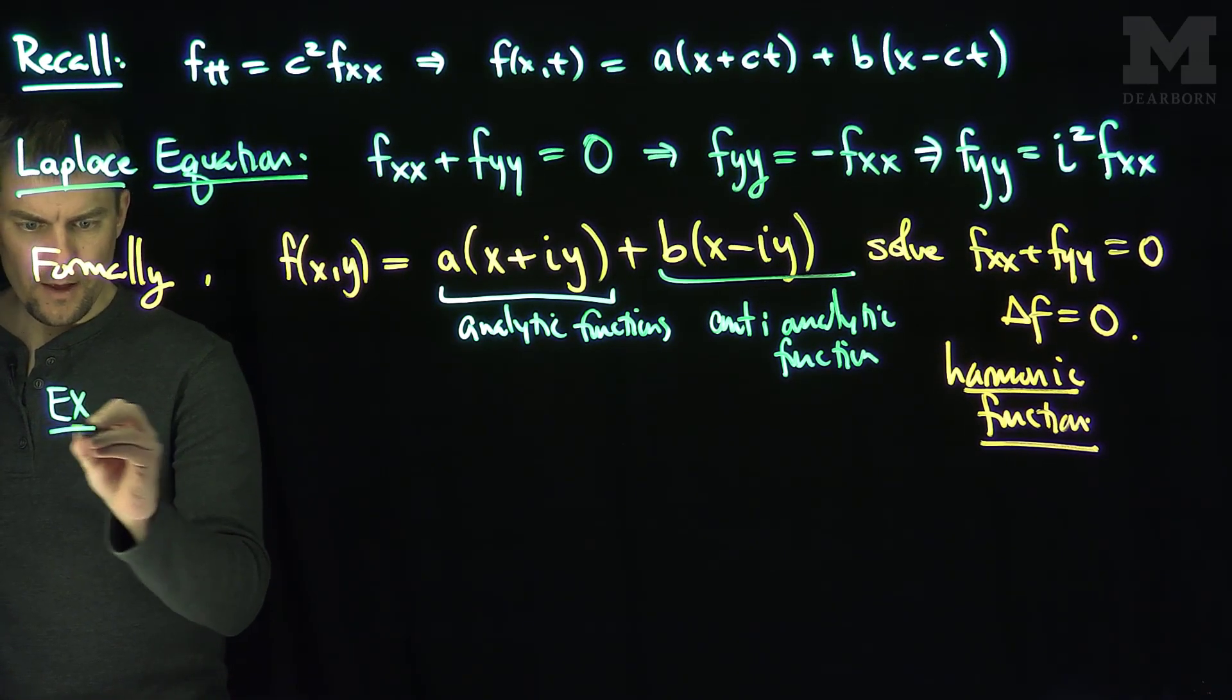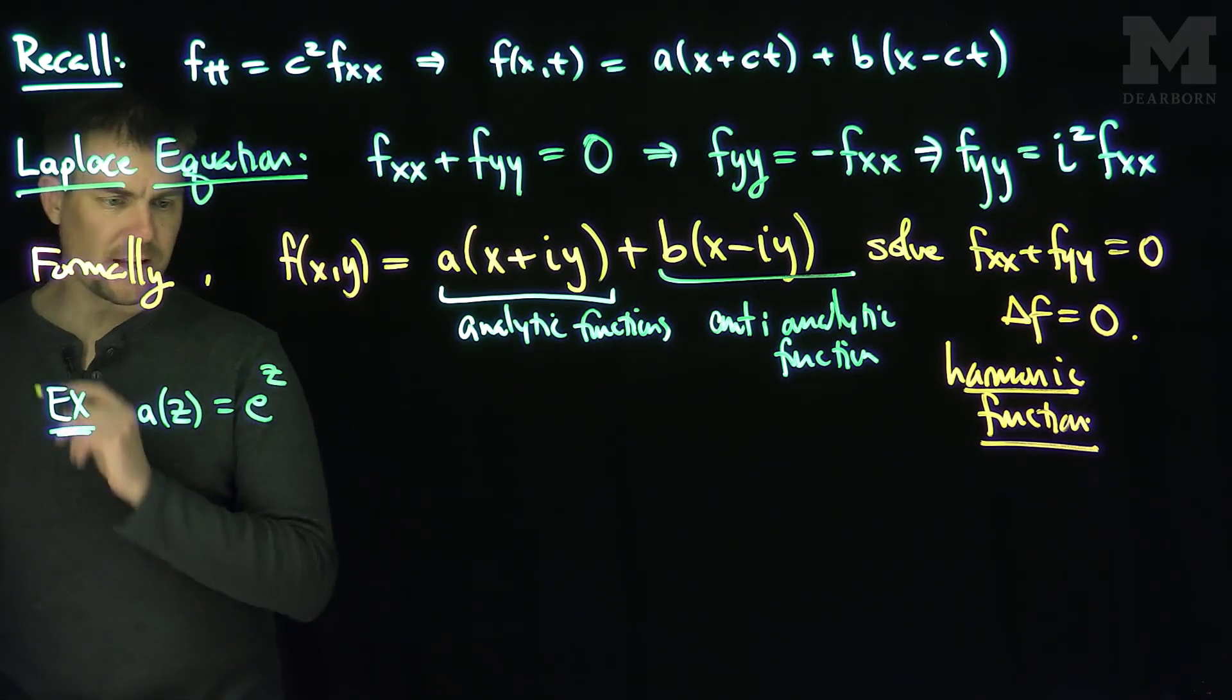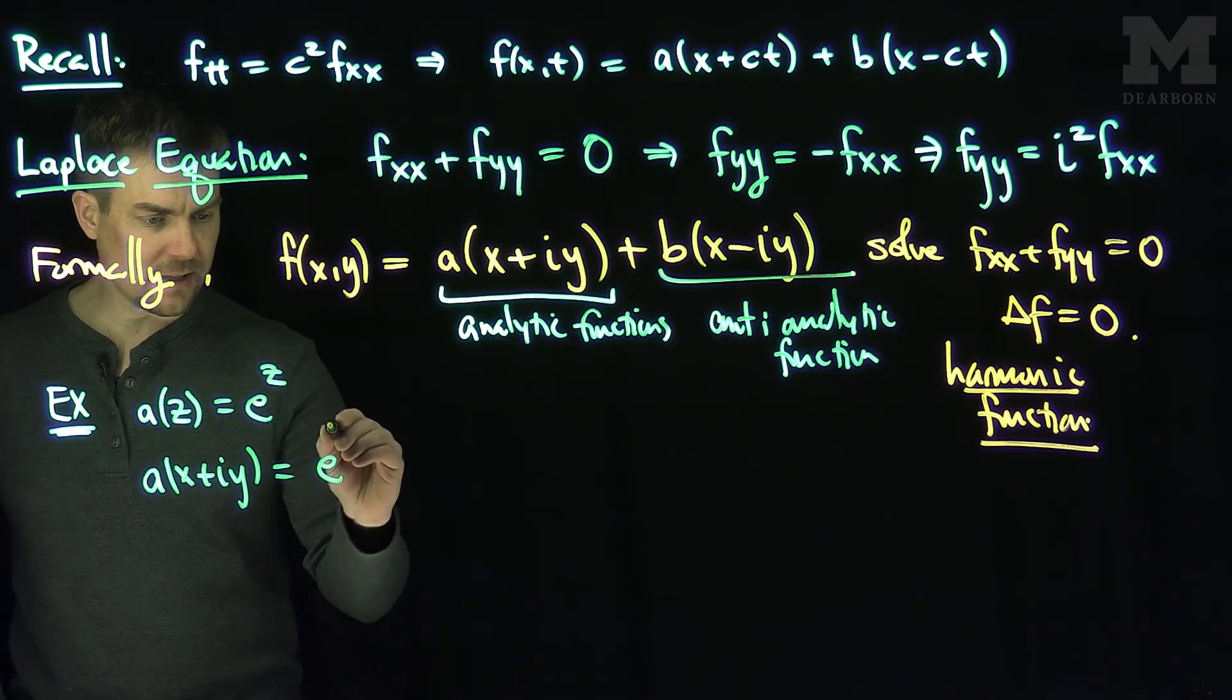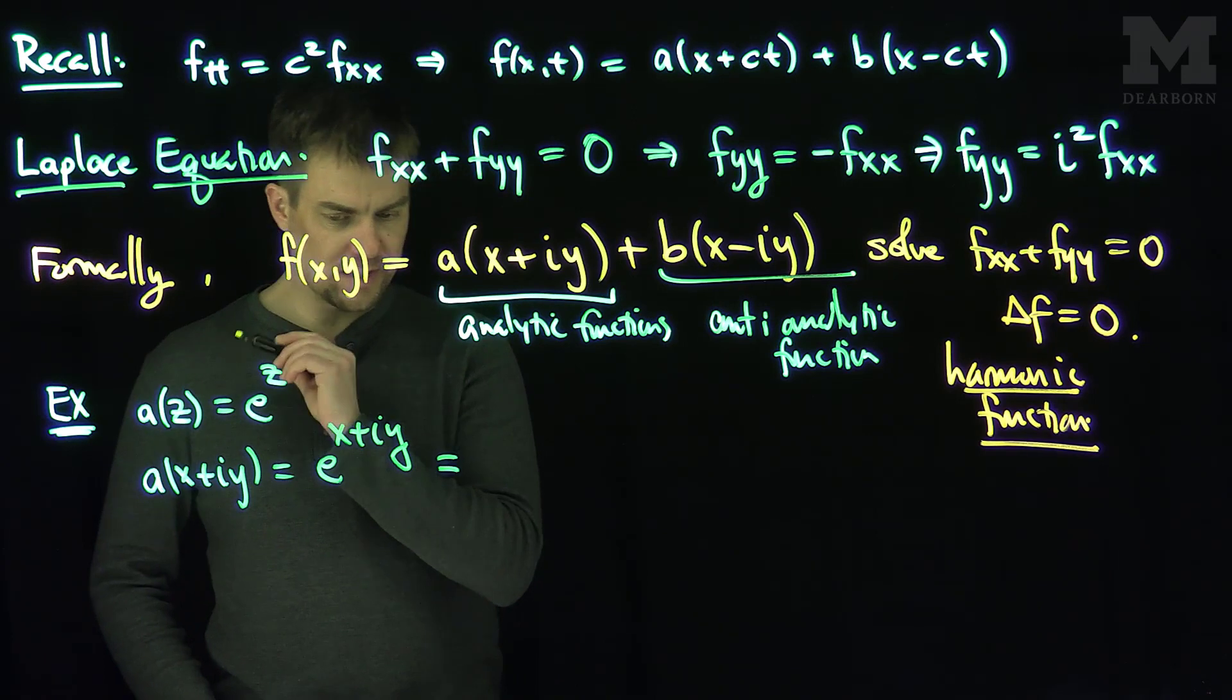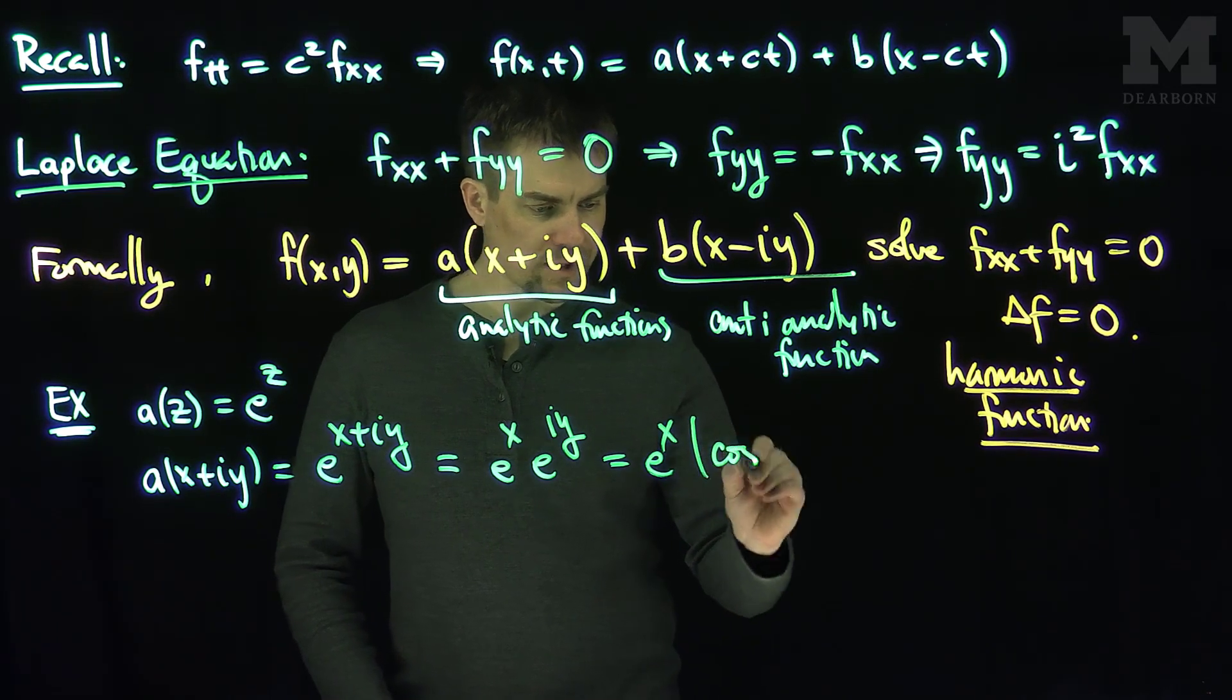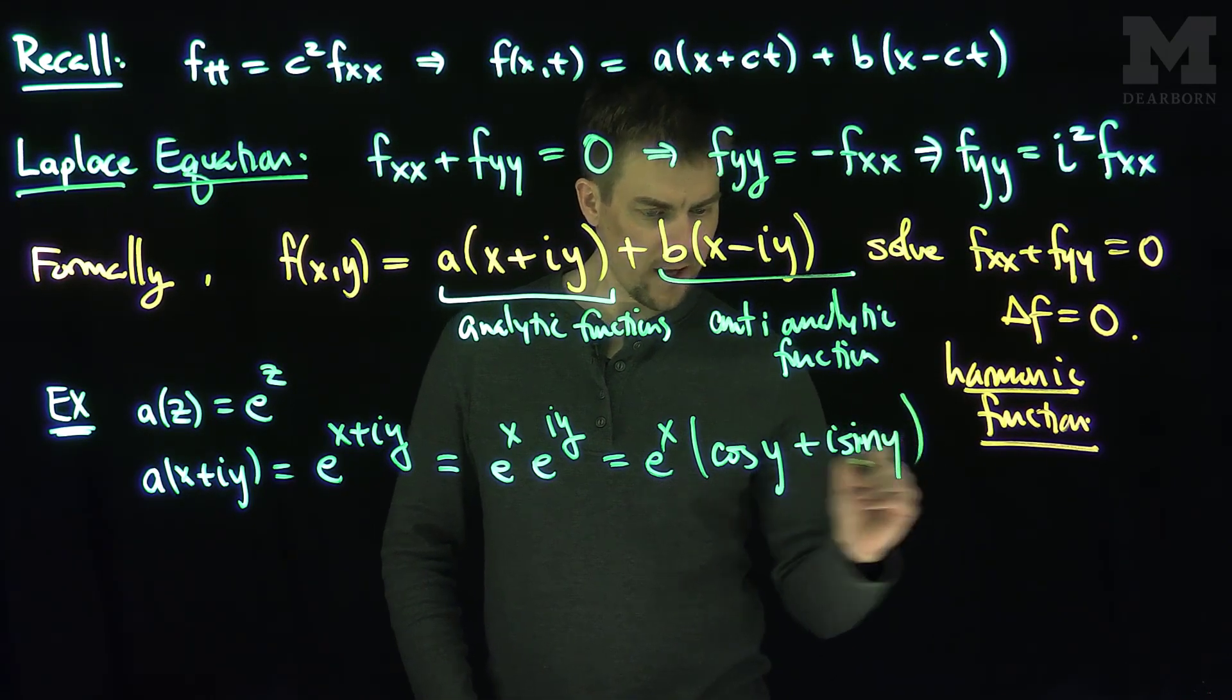Example: I'm going to take a very simple function. I'm going to take a(z) to be just e to the z. I'd like to see if this solves the Laplace equation. So in other words, what will a(x + iy) be? It'll be e to the x plus iy. And we'll see that this is e to the x times e to the iy. Now we know from Euler's formula that this is going to be cosine of y plus i sine of y.